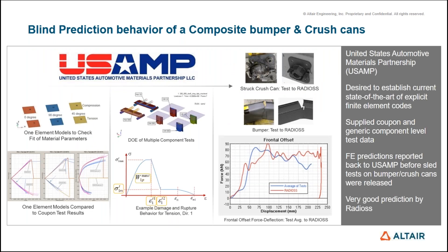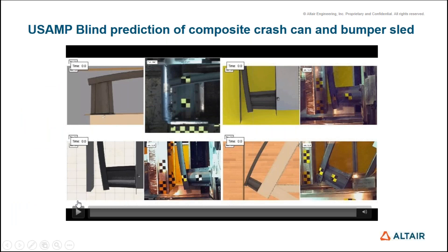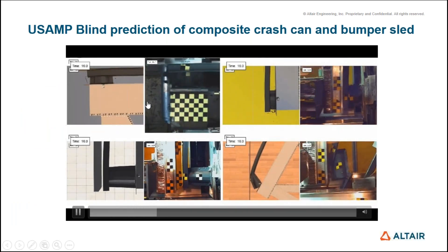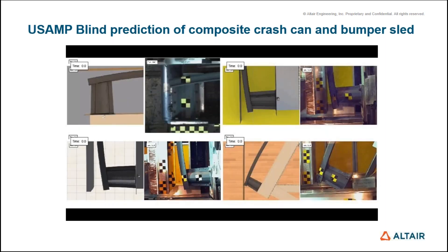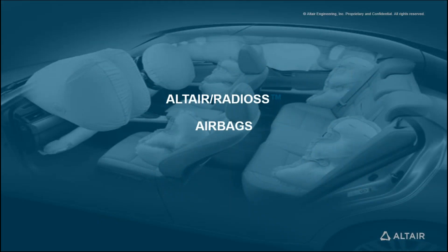Several benchmarks have been done with various organizations. For example, the United States Automotive Materials Partnership (USAMP) verified solver accuracy by running virtual simulations and comparing against actual physical testing — certifying solvers for typical crash tests such as bumper and crash test scenarios. The animations show close correlation between physical tests and virtual simulations.